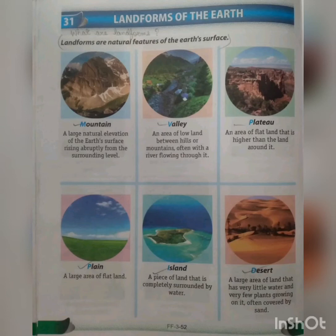Island: a piece of land that is completely surrounded by water — there will be land in the middle, but it is completely surrounded by water. And next comes desert: a large area of land that has very little water and very few plants growing on it, often covered by sand.